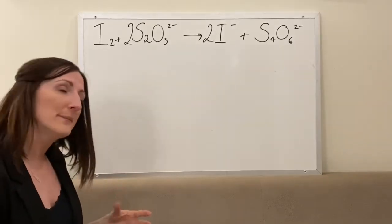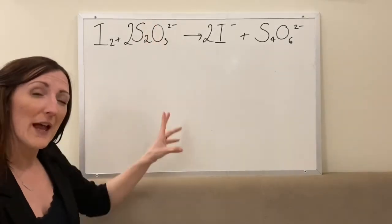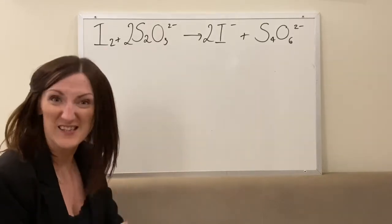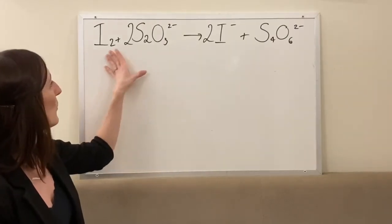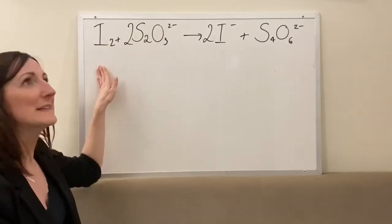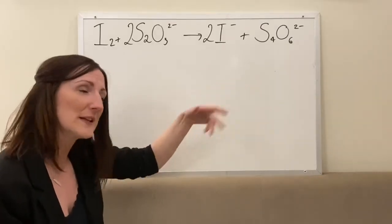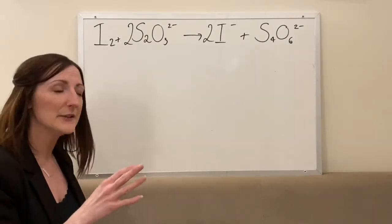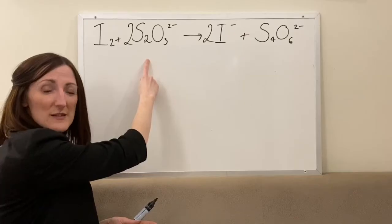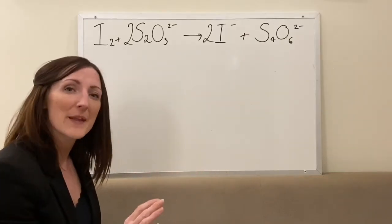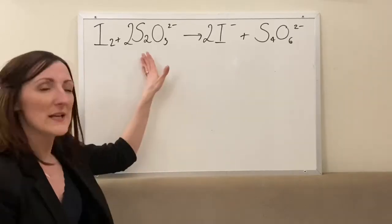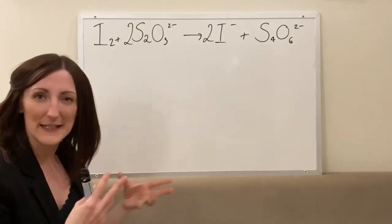When doing this titration, we have our sodium thiosulfate in our burette and we know the concentration of that. We add our indicator — the starch — but not right at the beginning. We add it when the solution is going pale yellow as the iodine concentration is decreasing. We add starch when it goes pale yellow, it will go blue-black because iodine is still there, and then we know exactly how much thiosulfate we've needed when the blue-black colour disappears. That volume lets us calculate moles of thiosulfate and then moles of iodine.